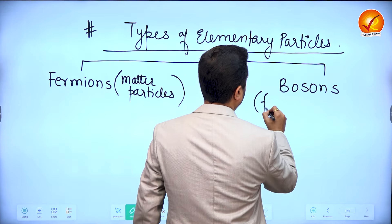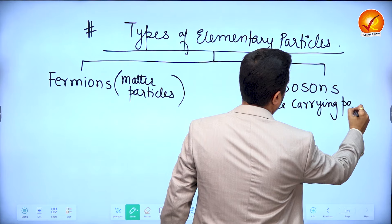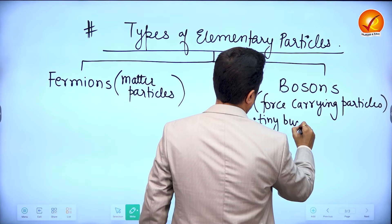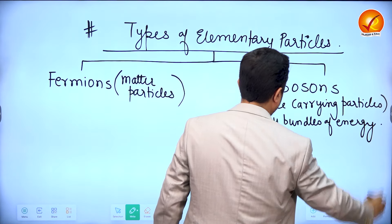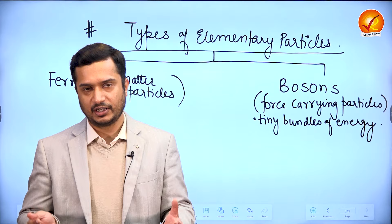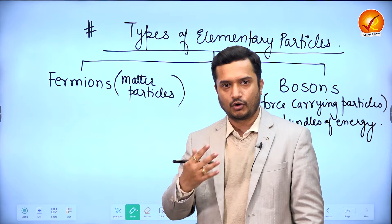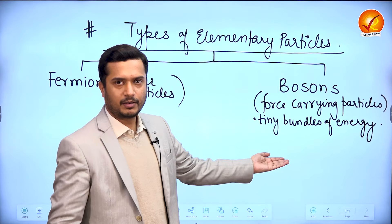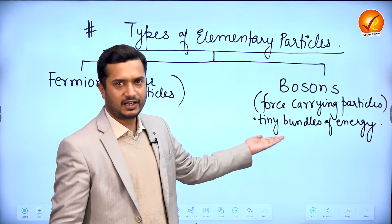Bosons are the force carrying particles, or you can call them tiny bundles of energy. The whole universe is either made up of matter or energy — so we have elementary particles for matter, which are called fermions, and for energy we have bosons. Bosons are the force carrying particles, or tiny bundles of energy.